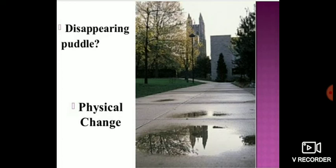Disappearing puddle: after heavy rain and rainy days, you get water collected everywhere. You see that after a few hours, that water gets evaporated or goes inside the ground and becomes groundwater. But still, that water is just changing state — it evaporates and becomes water vapor. There is no new substance formation. So again, this is a kind of physical change.